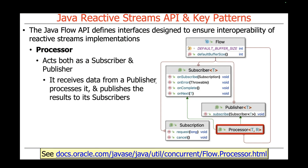There's also something called a Processor, which is both a subscriber and a publisher. It extends both Publisher and Subscriber, and so it can serve as an intermediate node in a pipeline, receiving data from events from a publisher and then passing them along to subsequent subscribers.